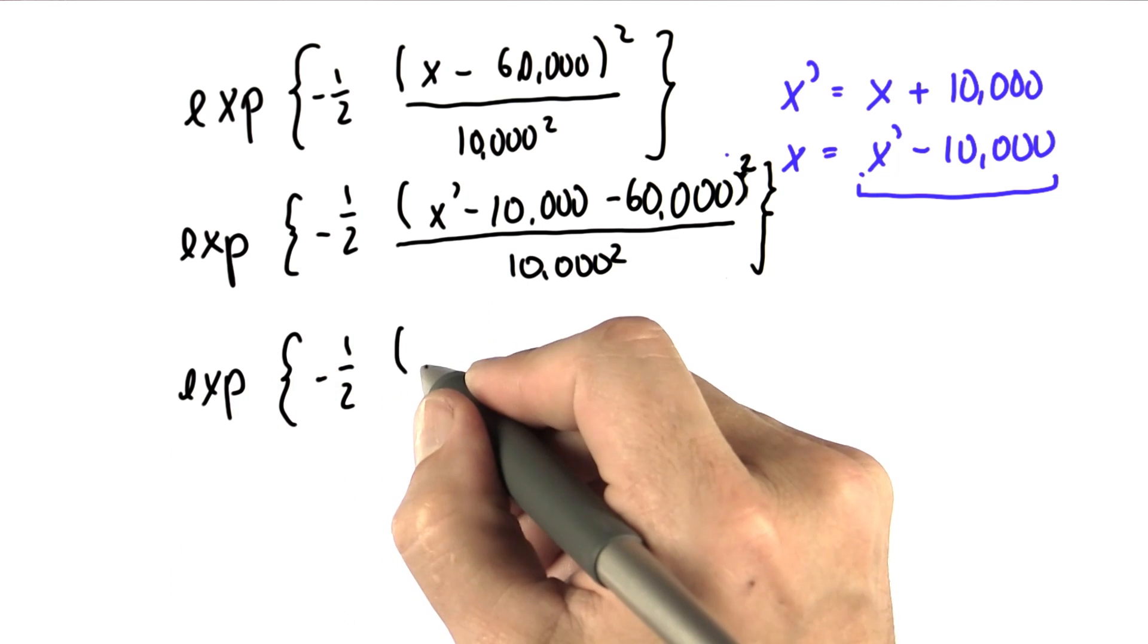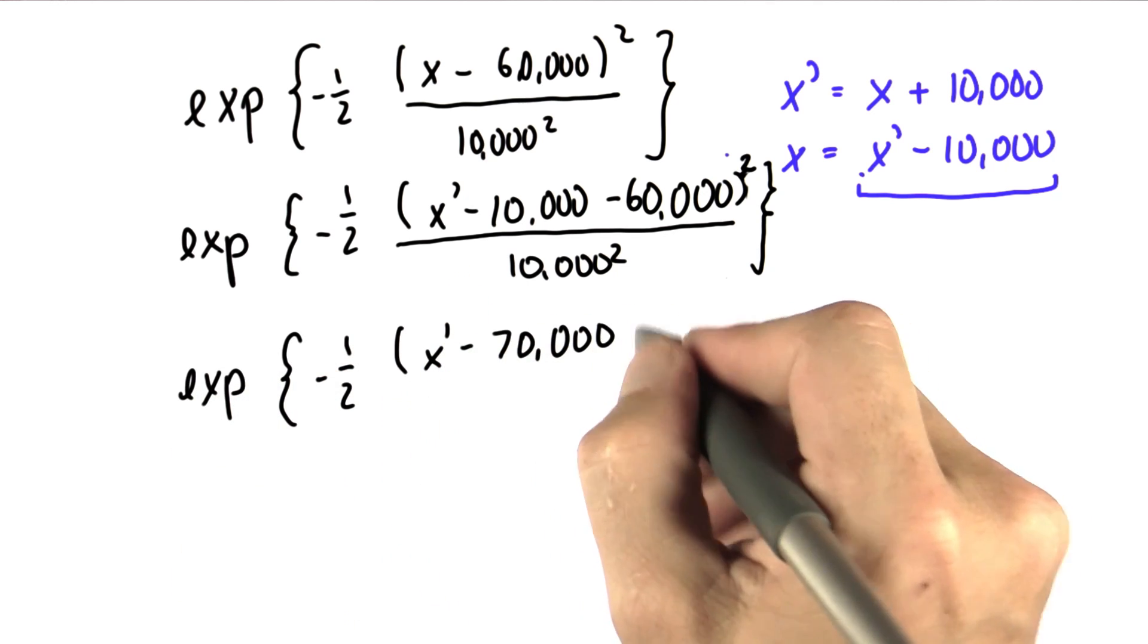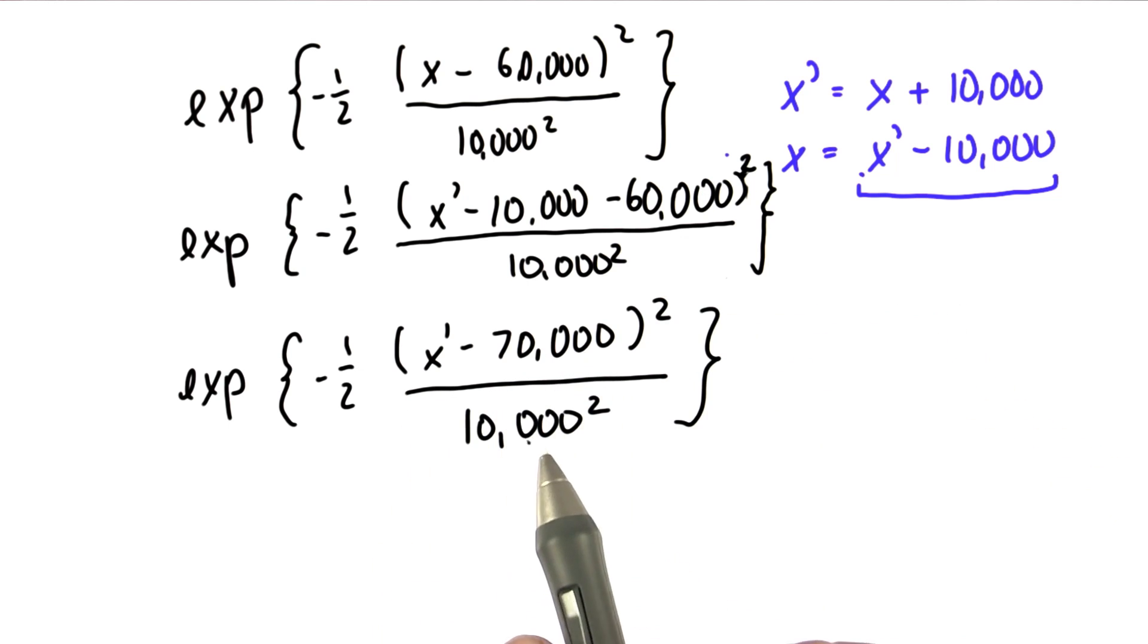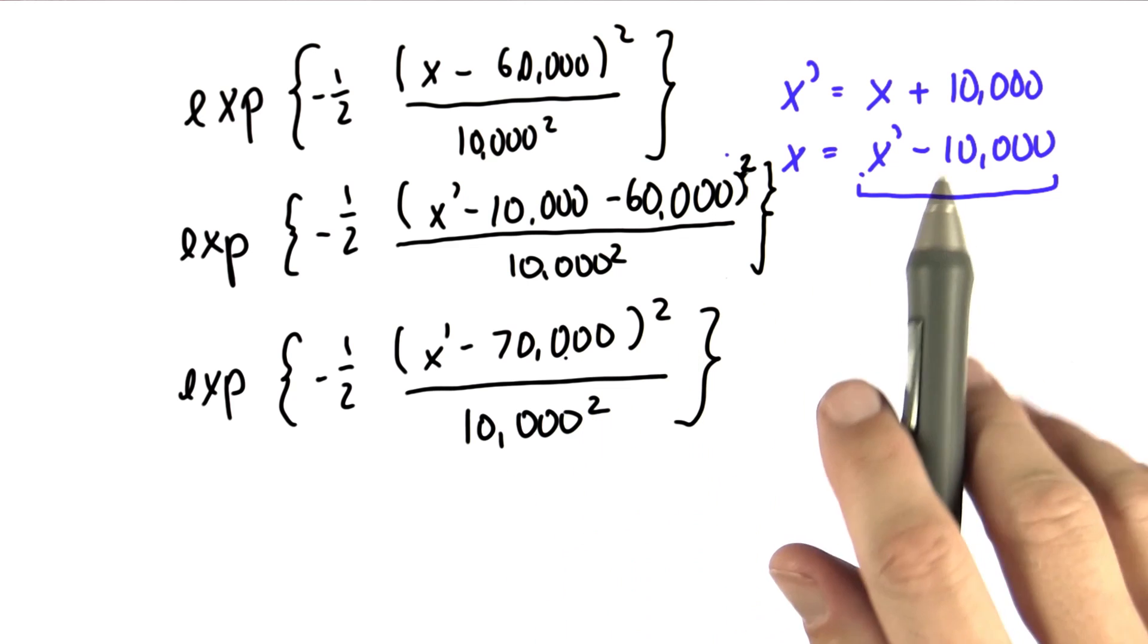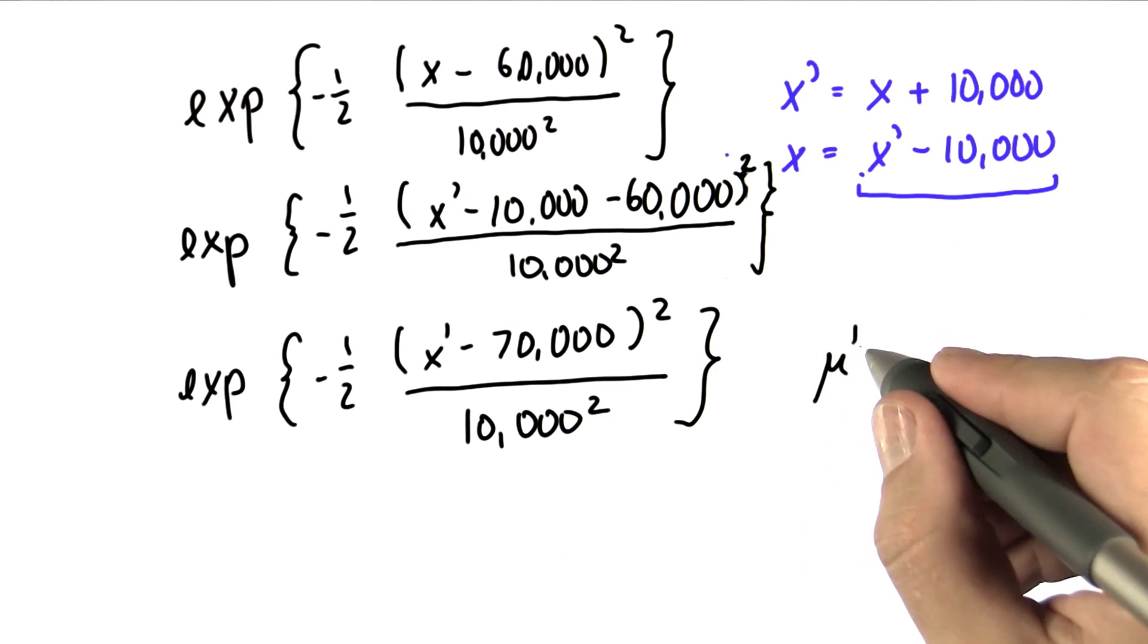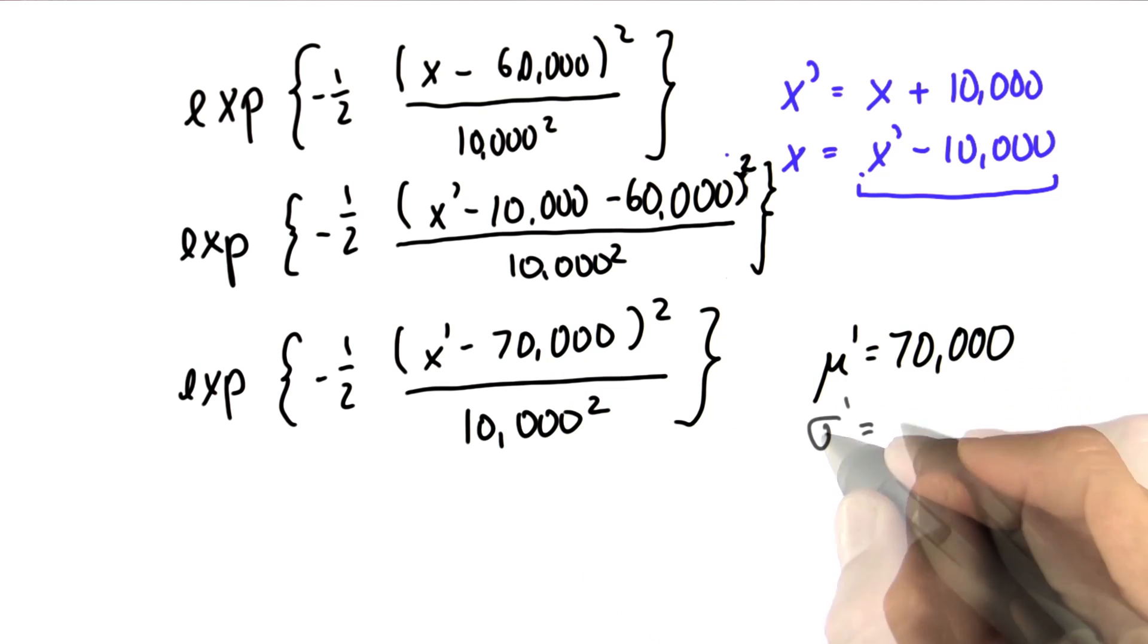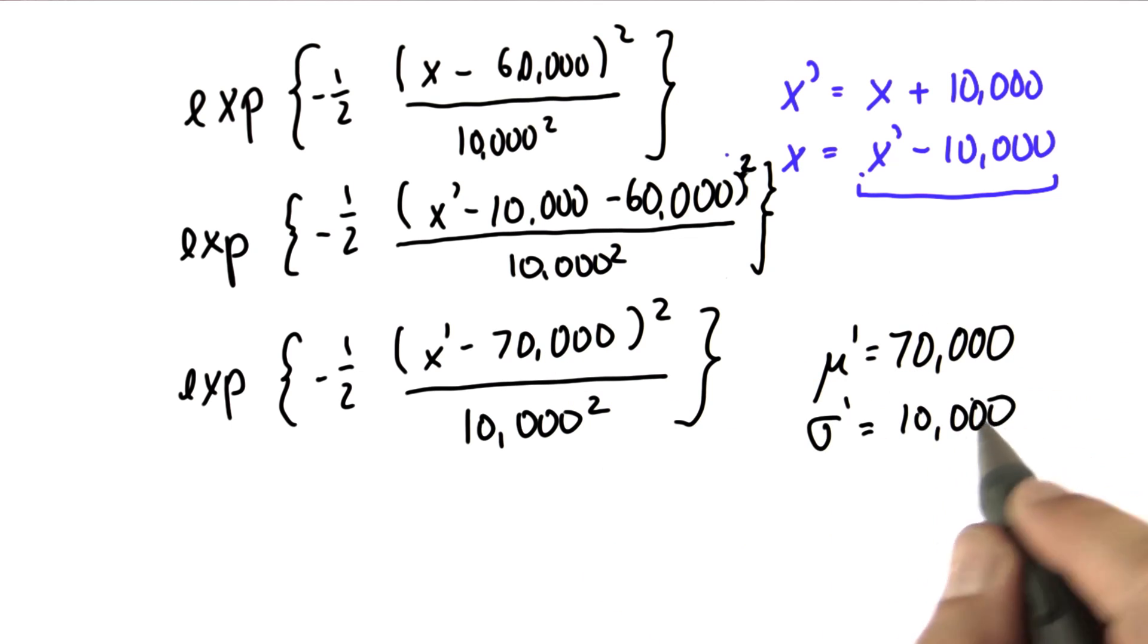you'll find this is the same as x' minus 70,000, the square over 10,000 square. So I proved to you that the variance or the standard deviation doesn't change and the mean is affected by just increasing it to 70,000. More differently, mu prime is now 70,000 and sigma prime remains 10,000.